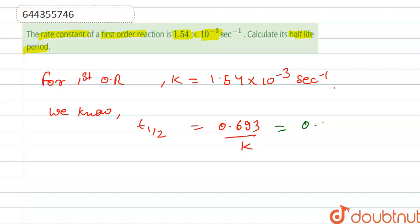We put in this equation, that is 0.693 upon 1.54 × 10⁻³. After solving this, we get 450 seconds. So this is the half life period of the reaction, the first order reaction.